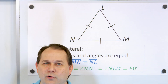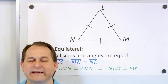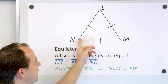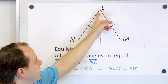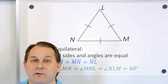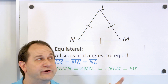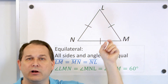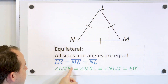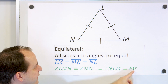Let me ask you a question. There are 180 degrees in every triangle. So if you know that all three angles must be equal, and you know that every triangle has 180 degrees when you add them all up, what is the measure of each of these angles? The measure of each angle is 60 degrees.